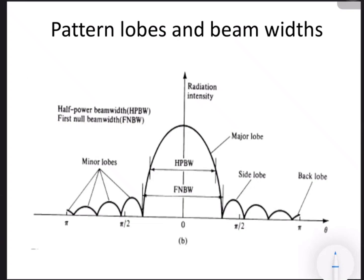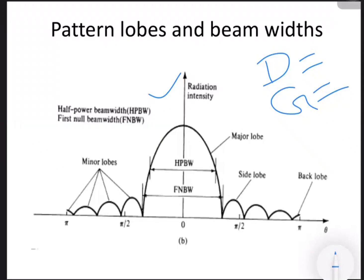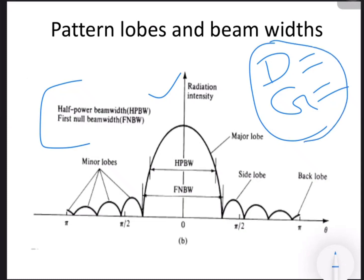The radiation pattern is a very important parameter for an antenna. Whenever an antenna radiates, the radiation pattern analysis can be done, which leads to the calculation of the half-power beam width. By knowing the value of half-power beam width, we can calculate the directivity and gain of an antenna. By obtaining the radiation pattern, we can derive the half-power beam width, first null beam width, and also the directivity and gain of that particular antenna.